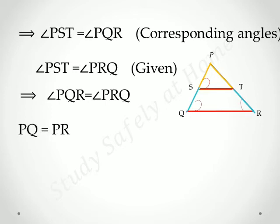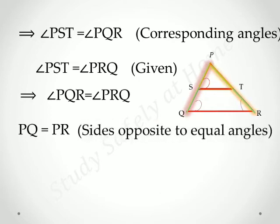So, PQ is equal to PR. Sides opposite to equal angles. This side is opposite to angle R, and PR is opposite to angle Q.